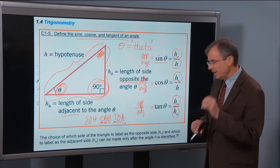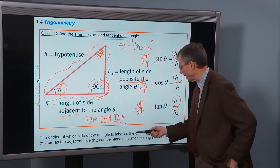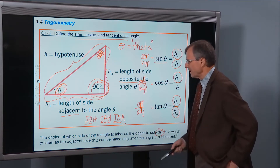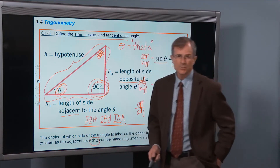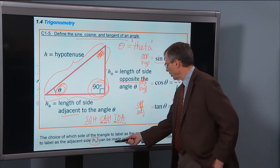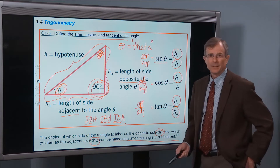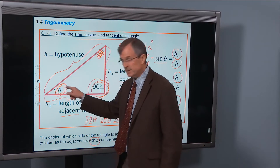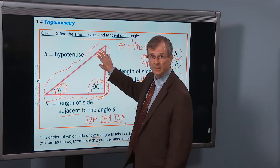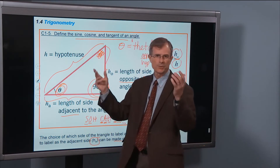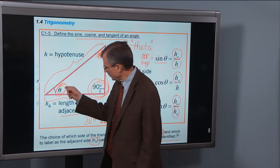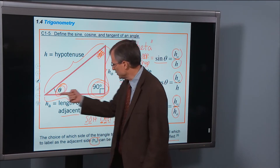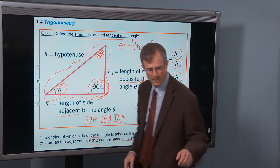The important thing here is that the choice of which side of the triangle to label as the opposite side and which to label as the adjacent side can only be made after the angle is identified. You have to say, okay, it's this angle here that I'm concerned about — and you're never concerned about the 90-degree angle. So if this is the angle I'm interested in, then the side adjacent to that angle is right next to it.